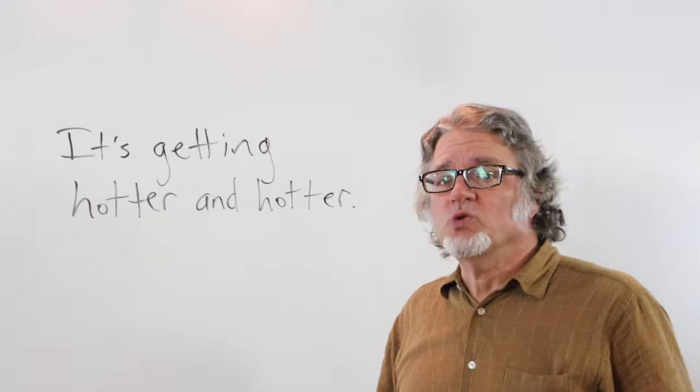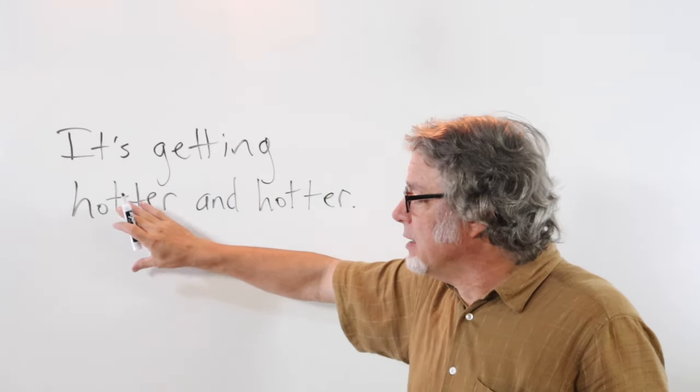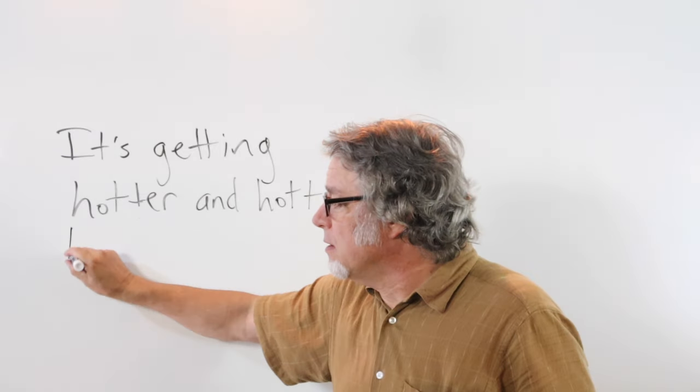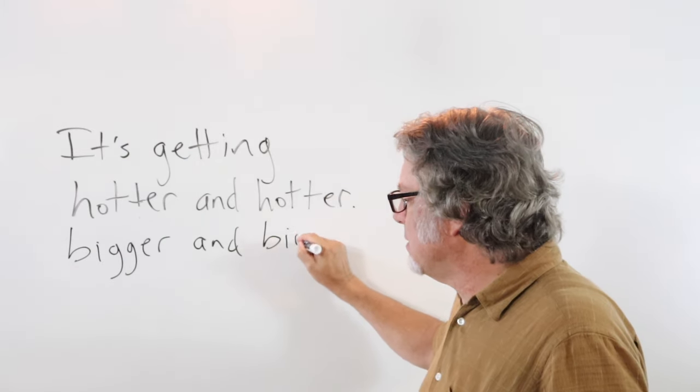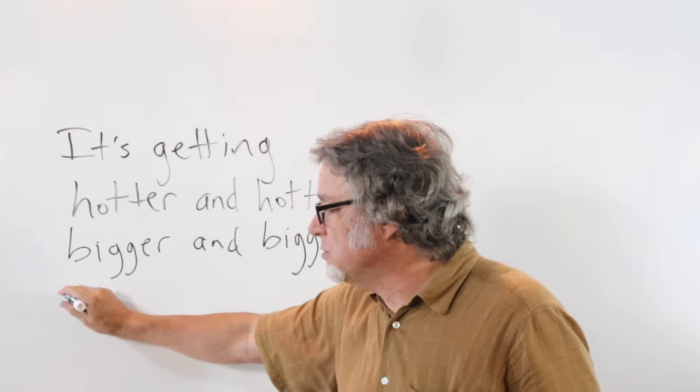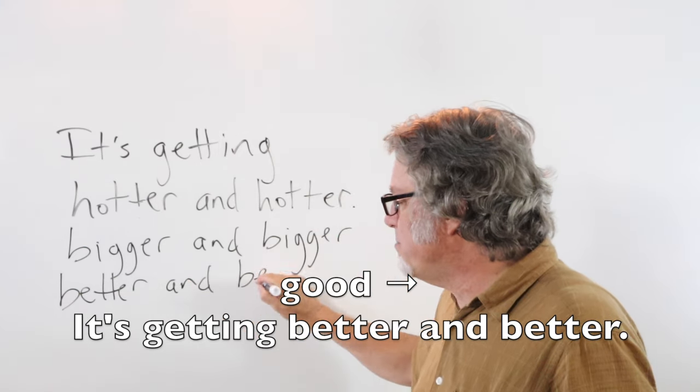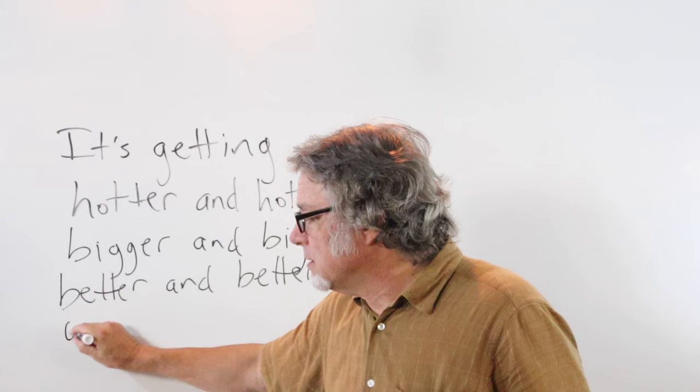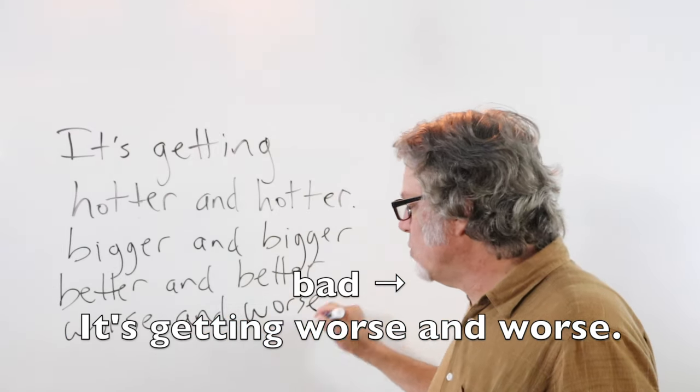The easiest way to double comparatives is simply to repeat the word. It's getting hotter and hotter, or bigger and bigger. For the adjective 'good,' you'd use 'better,' better and better. And for the adjective 'bad,' use 'worse.' It's getting worse and worse.